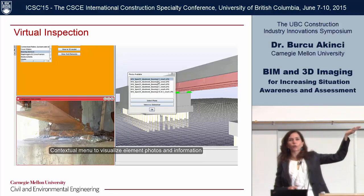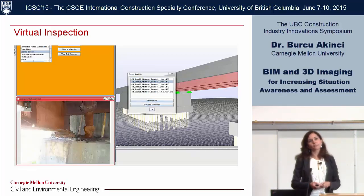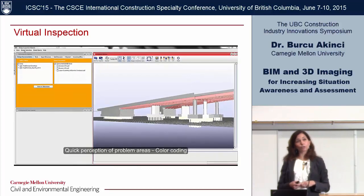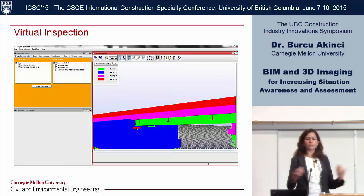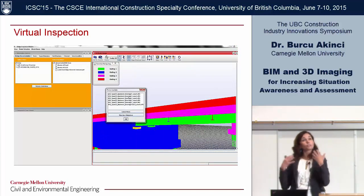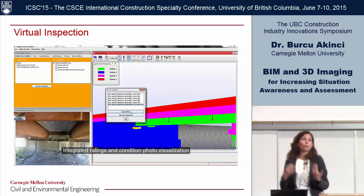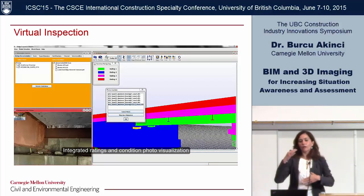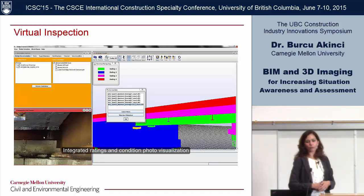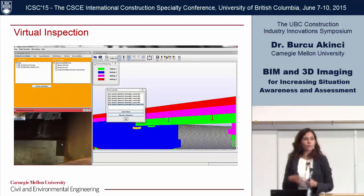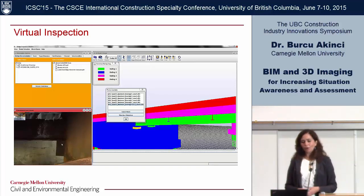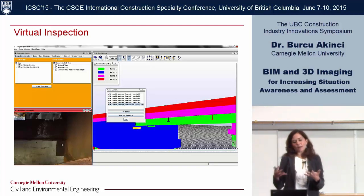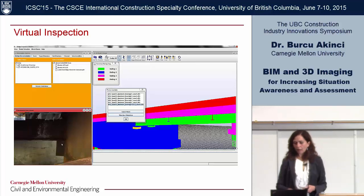With that integrated environment, we're exploring how well inspectors make decisions and whether it helps them. You can click on a girder and retrieve pictures the drone took of that girder, or see previous ratings of bridge components, focus on a specific component, and see why it was assessed as condition one, two, or three — with the data tied to that specific component. This is still a prototype as we explore ways to streamline decision-making.